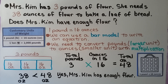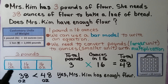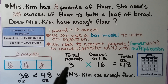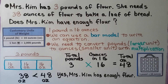Mrs. Kim has three pounds of flour. She needs thirty-eight ounces of flour to bake a loaf of bread. Does Mrs. Kim have enough flour? Looking at our table, one pound is sixteen ounces. Using a bar model, three pounds means three sixteens, so three times sixteen equals forty-eight ounces. We're converting pounds to ounces using multiplication. Thirty-eight ounces is less than forty-eight ounces, so yes, Mrs. Kim has enough flour.